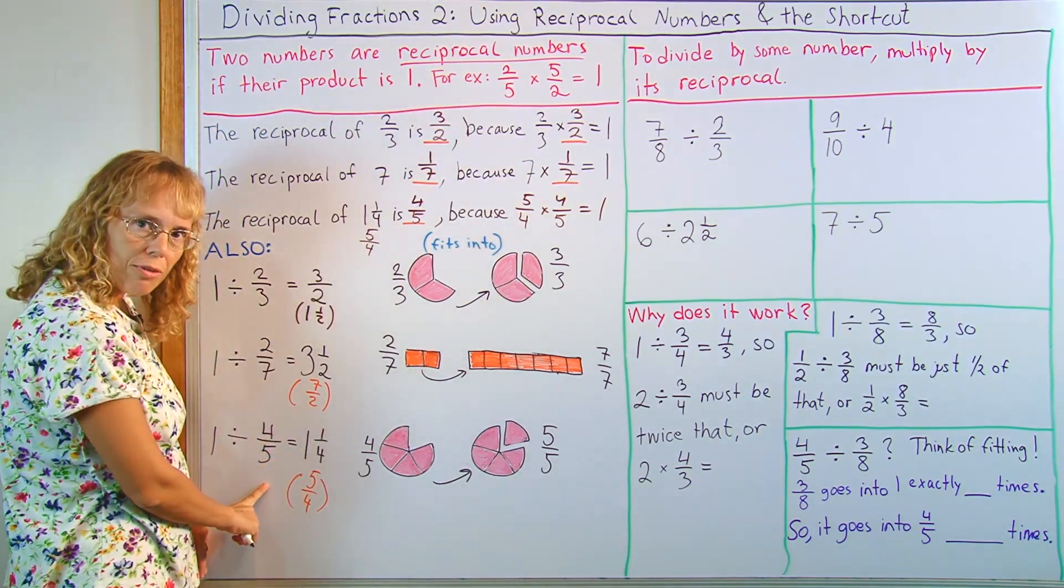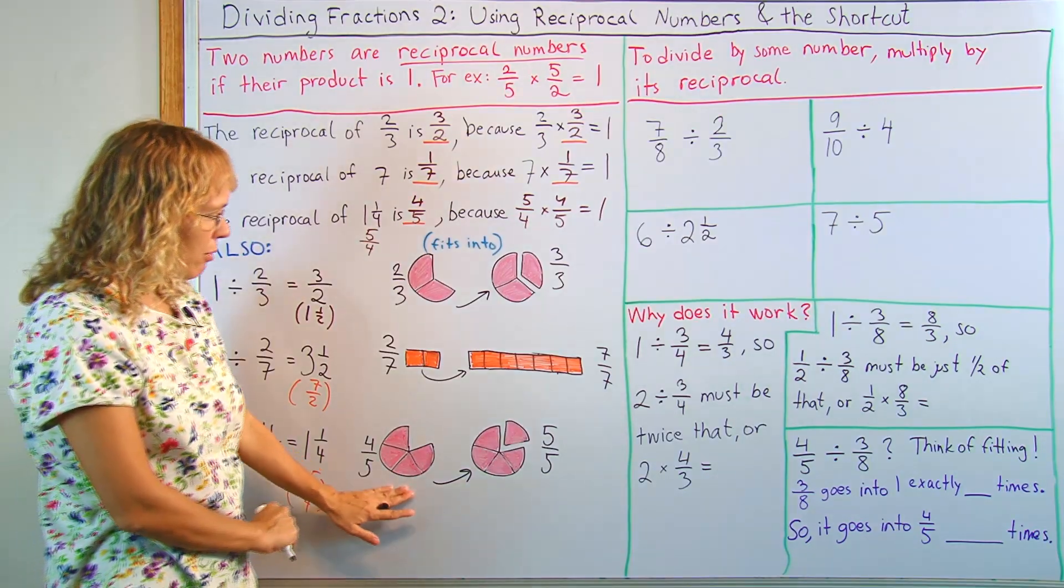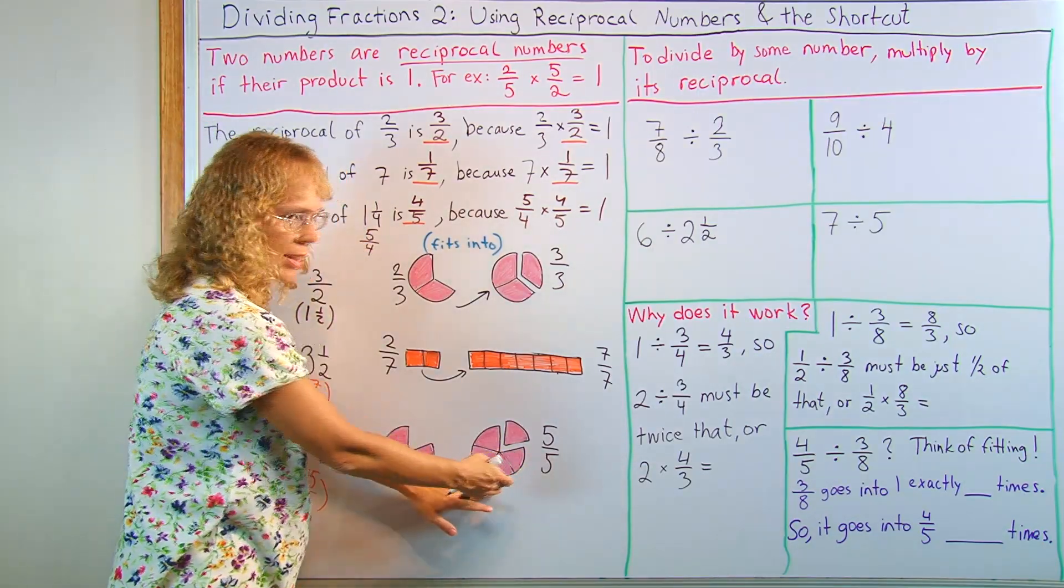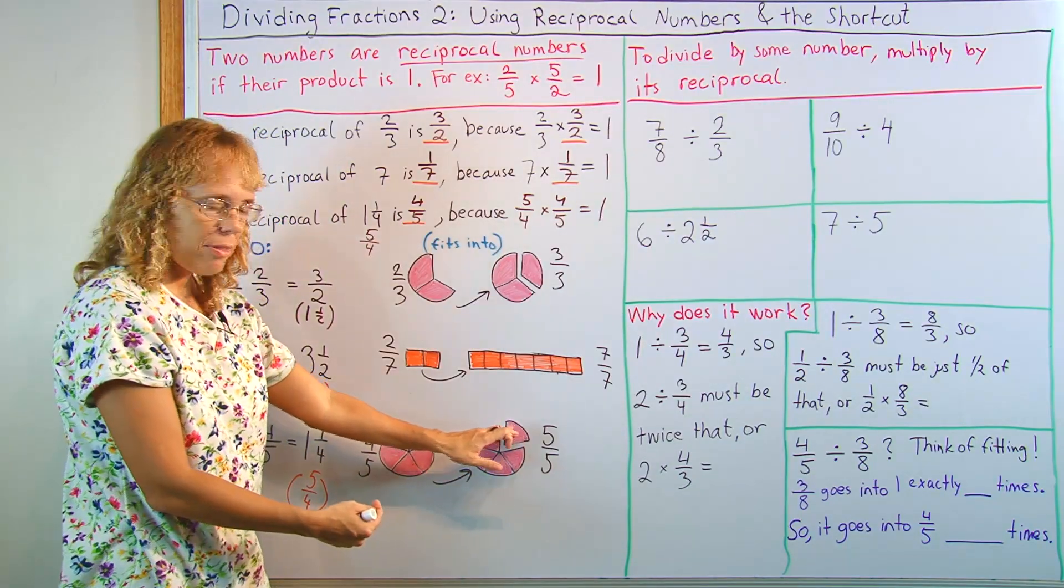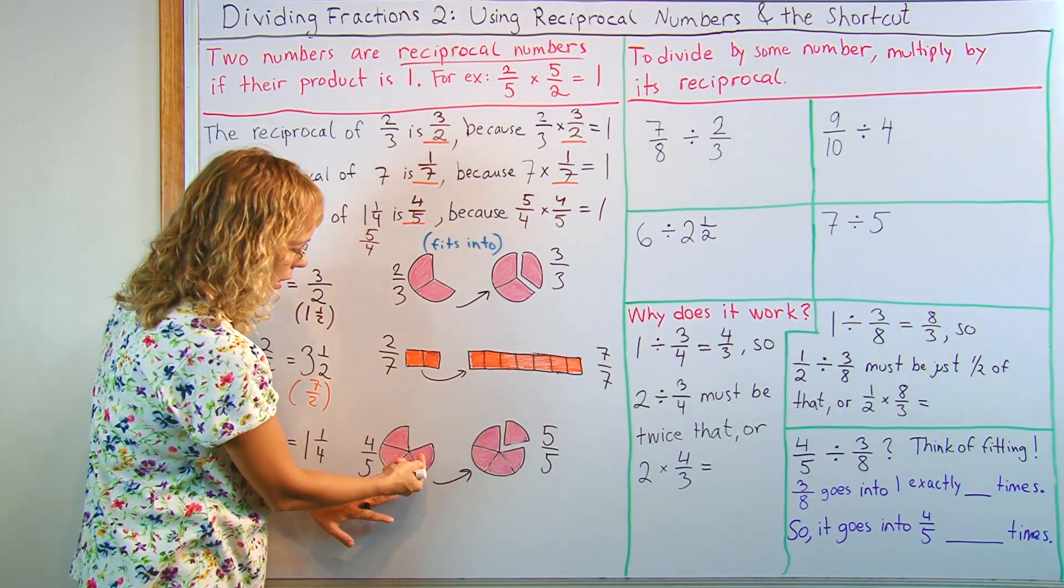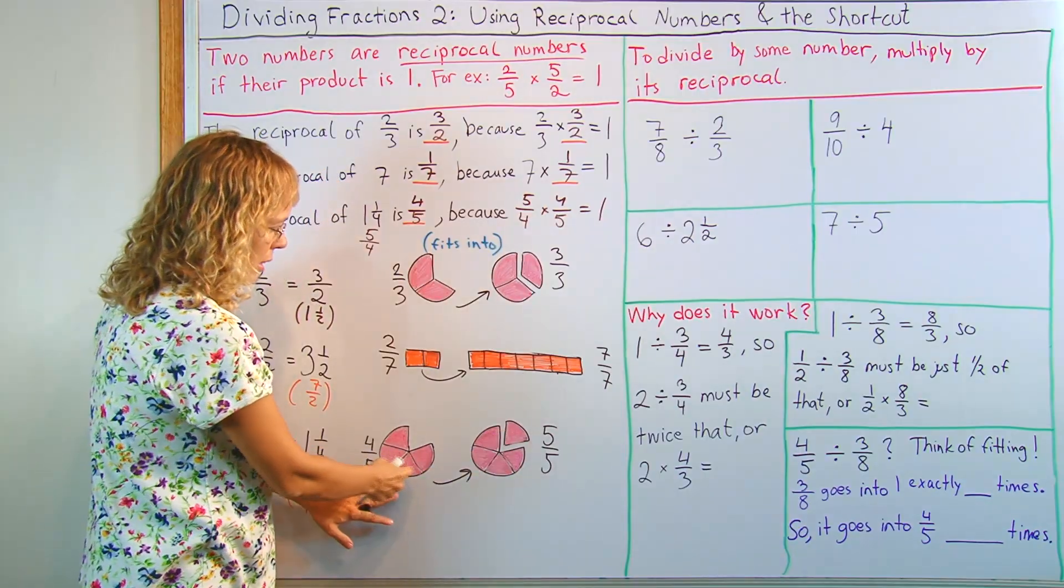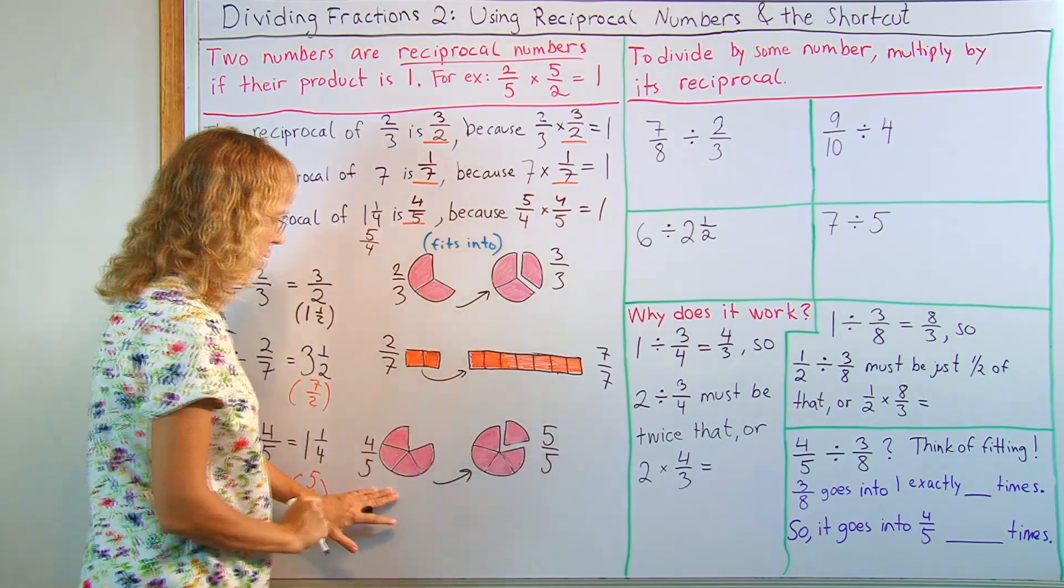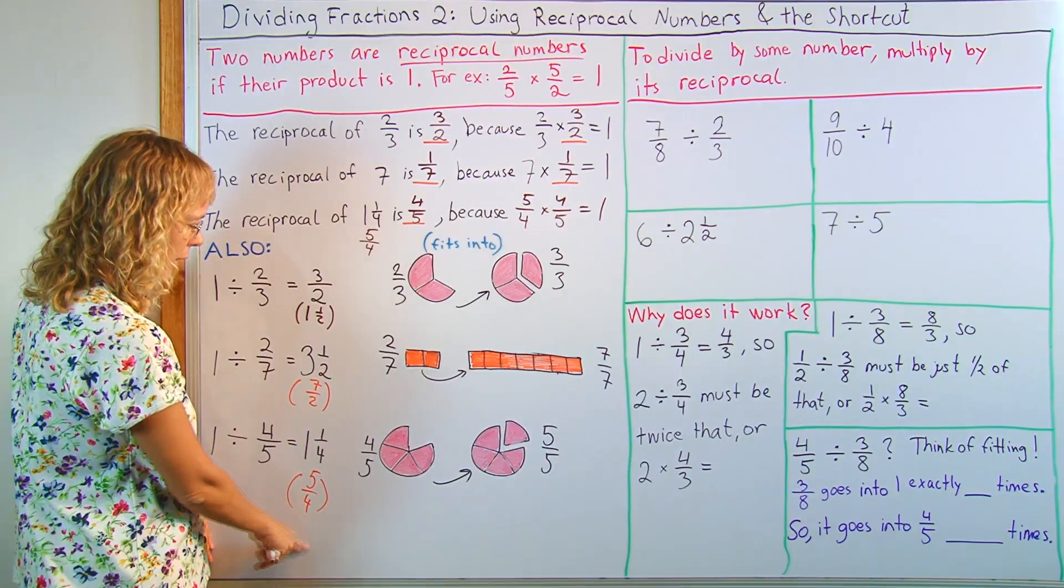Or, how many times would four-fifths fit into one whole pie? Here's my four-fifths. Here's my whole pie. Okay, it fits in there once, just nicely, into this part here. And then into this little part, one-fifths. Okay, it doesn't fit fully into there, but just exactly one slice of this thingy would fit into that one slice. So those four slices, one-fourth of this thingy would fit in there. So in total, one and a one-fourth times. Okay, so that's what this is meaning here.